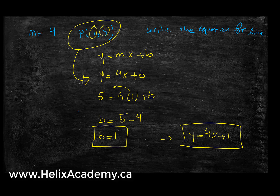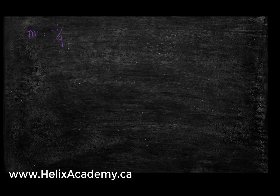Therefore, my equation is y equals 4x plus 1. And that's the equation of the line. Let's do another example: the slope is negative 1 fourth, and the line passes through the point negative 2 and 5. Write an equation for this line.